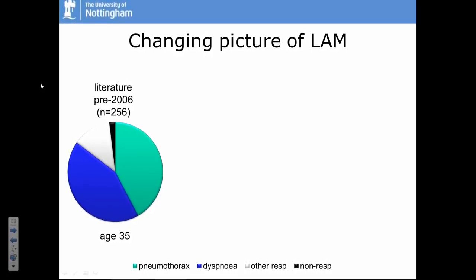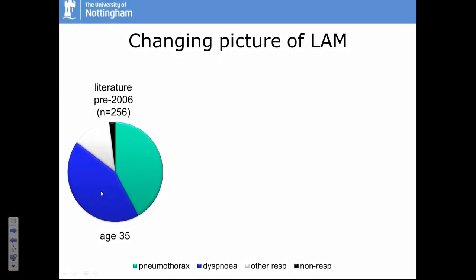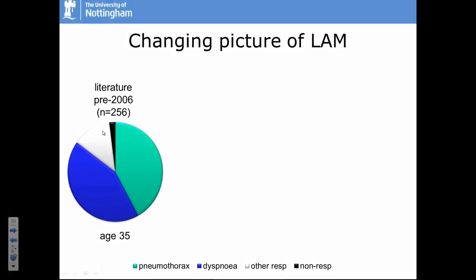This pie chart shows the number of people whose first symptom is either pneumothorax or breathlessness, with a very small number having other presentations such as abdominal problems. Most patients, looking at the previous literature, either had pneumothorax or presented with breathlessness.